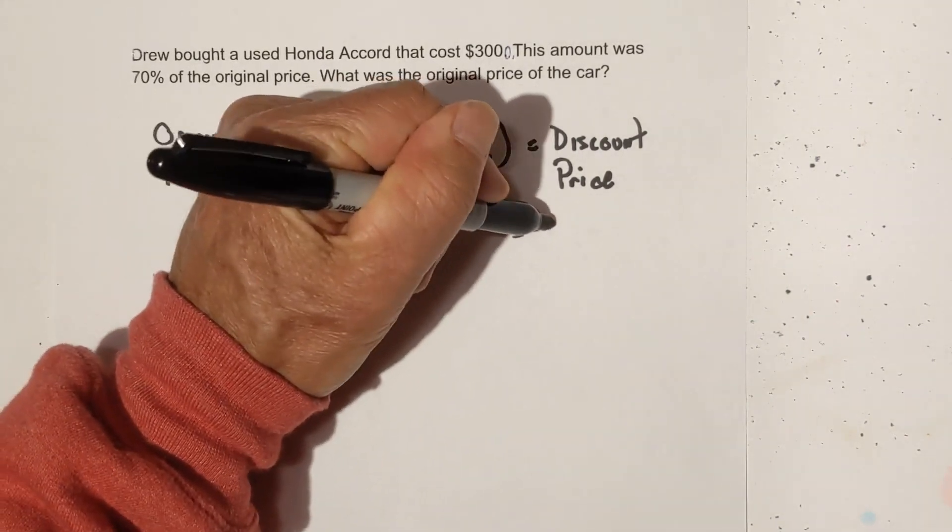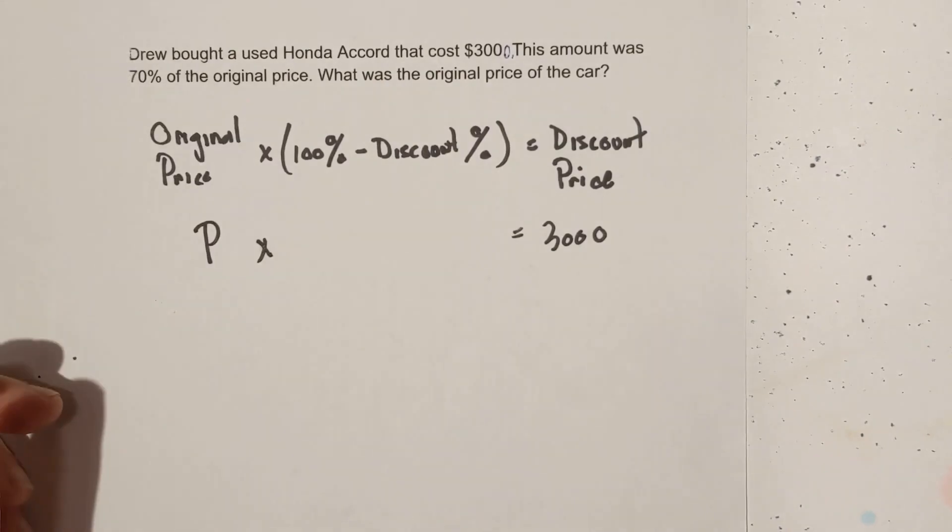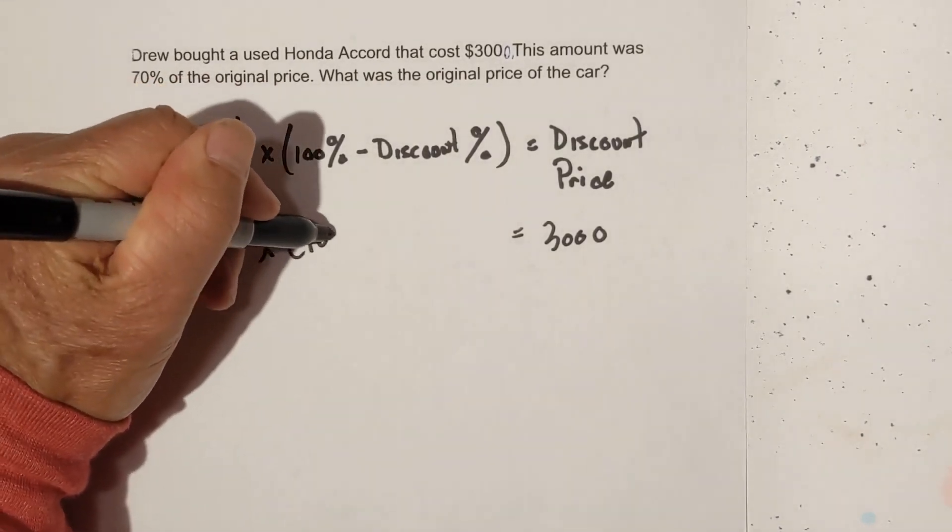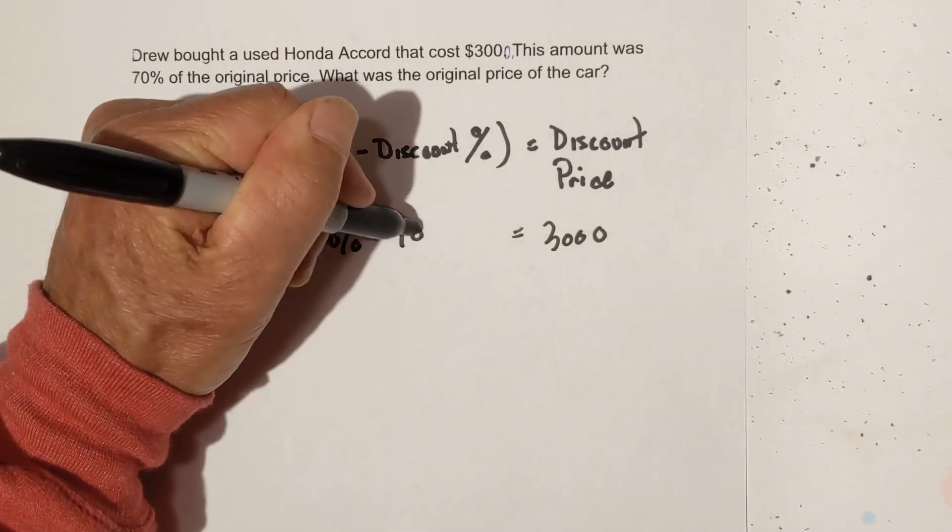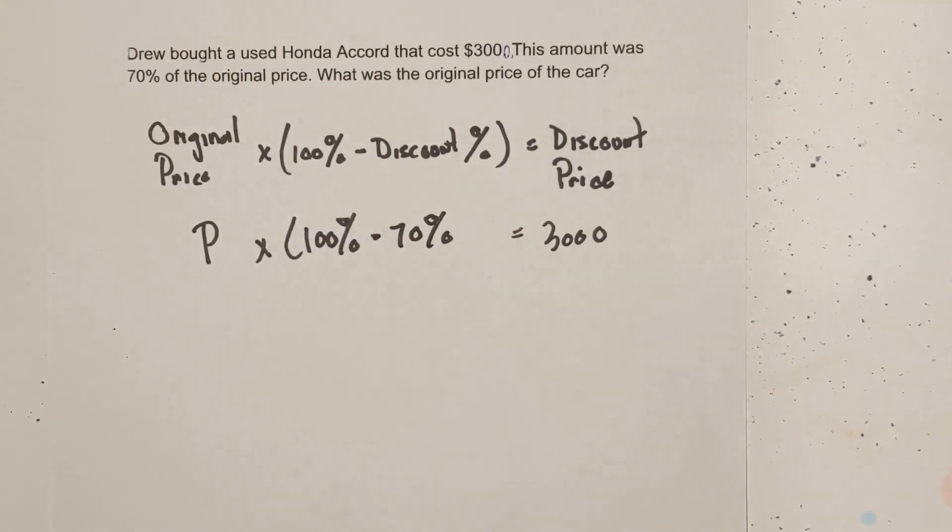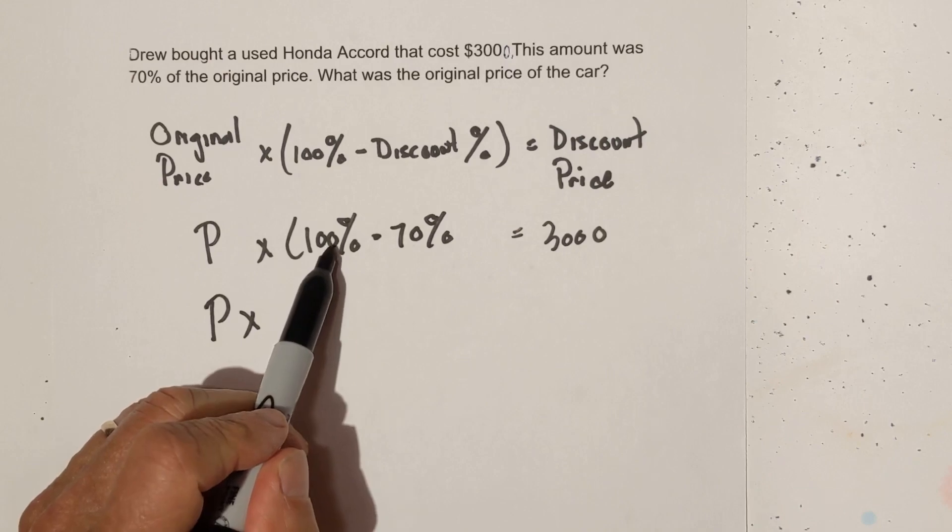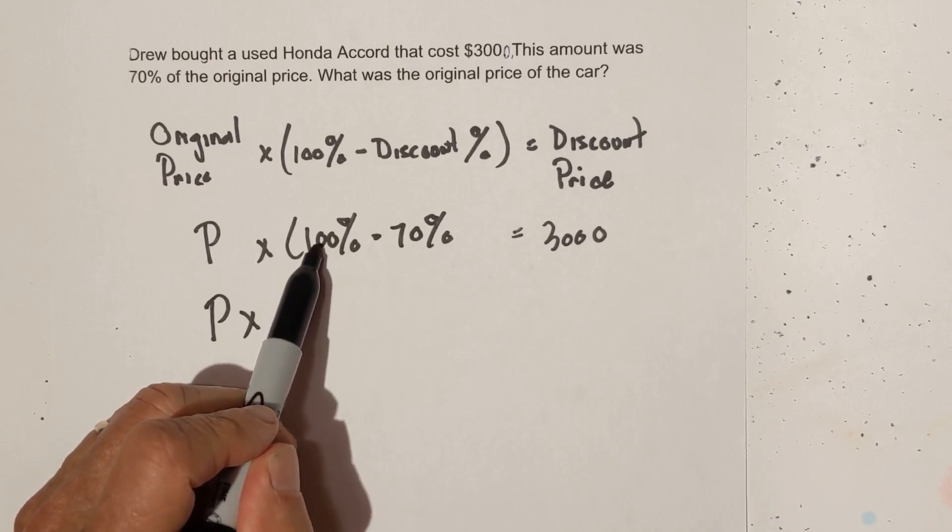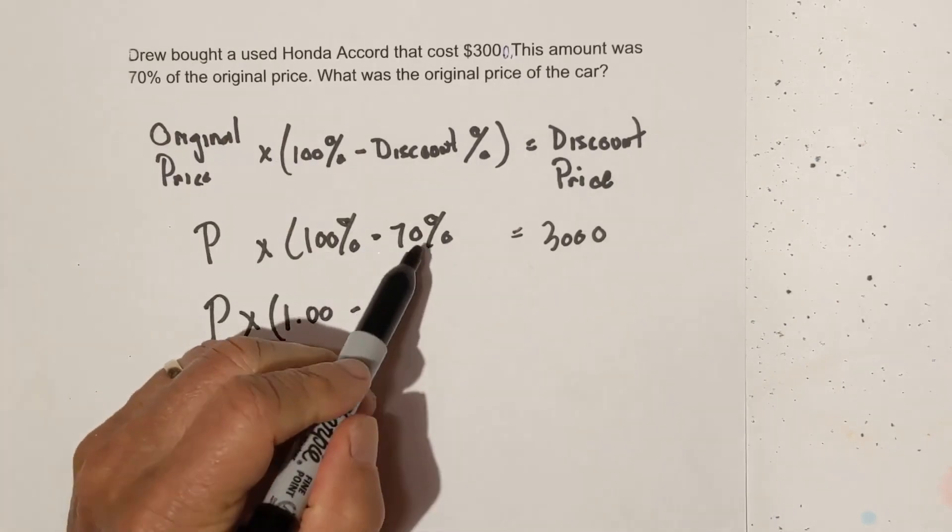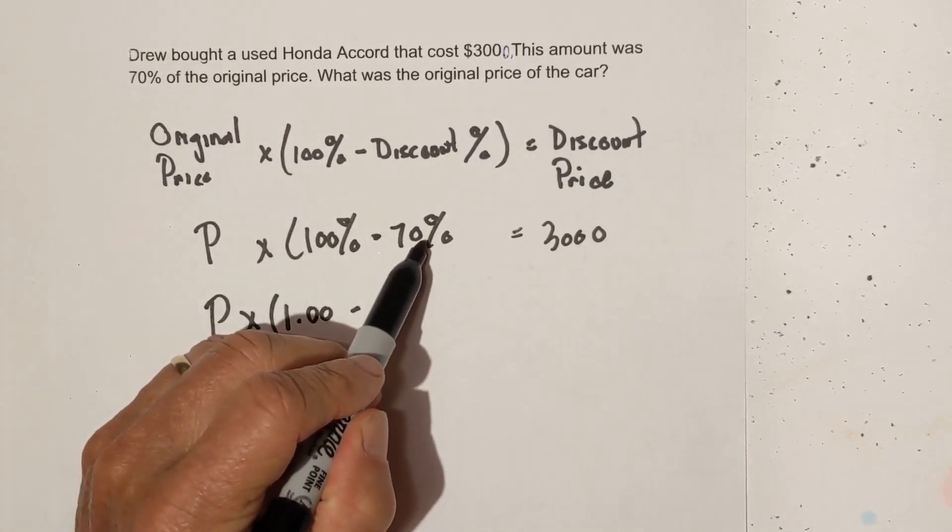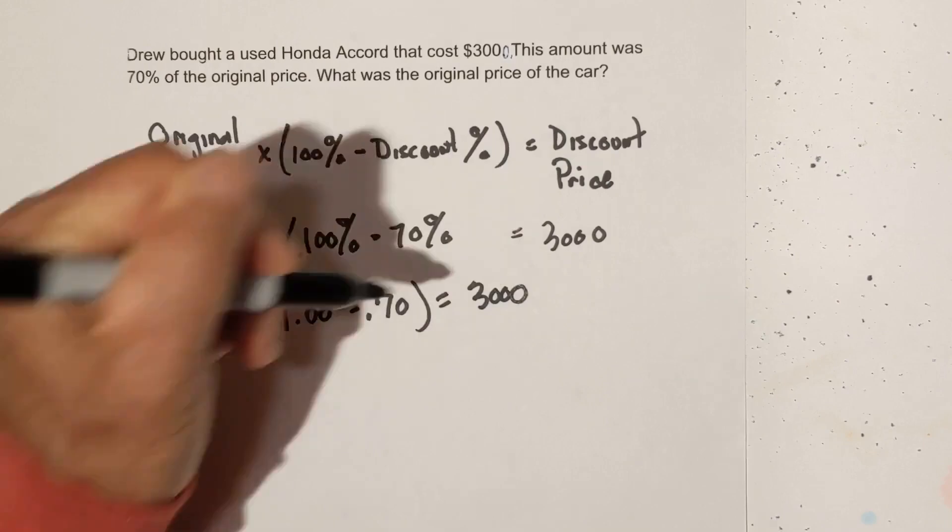Let's plug in what we know. We know that the discount price is $3,000. The original price we're going to call P. We're going to take 100% and it was discounted 70%. So we have our equation set up. Now, we're going to go P times we're going to convert 100% by moving the decimal places 2 to the left. So that becomes 1. And we're going to move this decimal 2 places to the left is 0.70 equals 3,000.